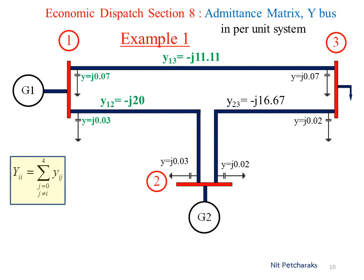The line admittance is the summation of all line admittance linking with bus 1 in the green color. The value of Y11 is minus J31.01 per unit.